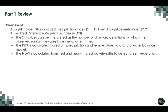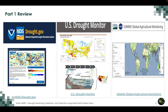Two satellites — Soil Moisture Active Passive and GRACE Follow-On — provide these datasets. We also had an overview of drought indices including the Standardized Precipitation Index (SPI), Palmer Drought Severity Index (PDSI), and Normalized Difference Vegetation Index (NDVI). The SPI is calculated based on precipitation data and shows the number of standard deviations by which observed rainfall deviates from the long-term mean at a given location. The PDSI is a similar deviation but calculated based on precipitation and temperature data, and also uses a water balance model. NDVI is calculated from red and near-infrared wavelengths and detects green vegetation. We also looked at different categories of drought and how they are derived from percentile values of various parameters such as soil moisture, precipitation, and PDSI.